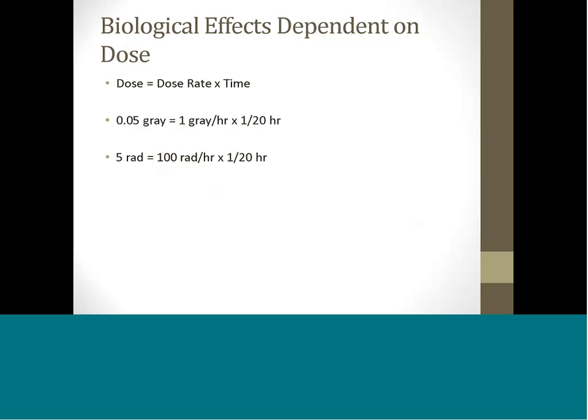Biological damage is dependent on the dose, not the dose rate. The specific example uses both the new SI, or international system of units, called the gray, and the older unit of dose, called the rad. One-twentieth of an hour is three minutes — actually a rather long time to be in a radiation field as high as 100 rad per hour.